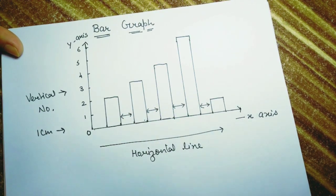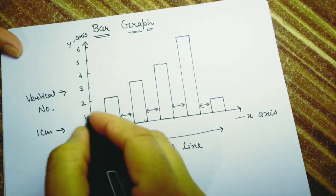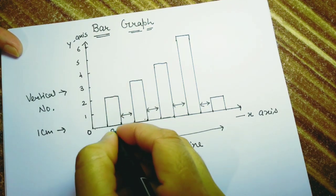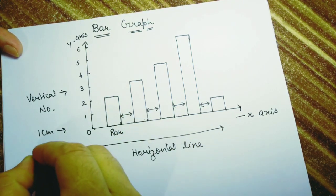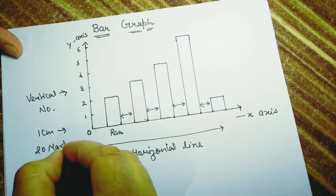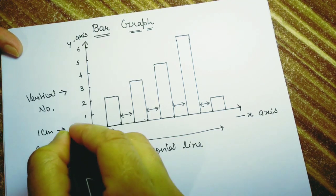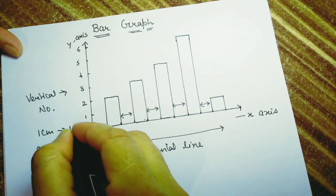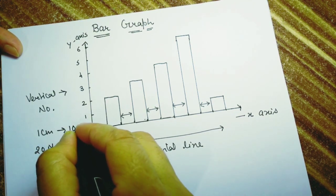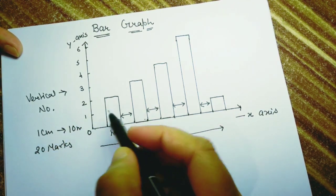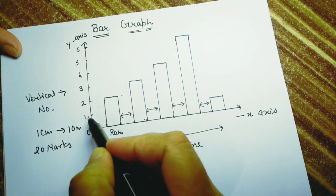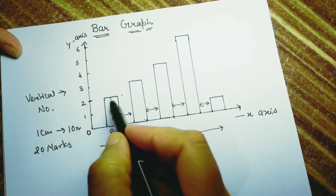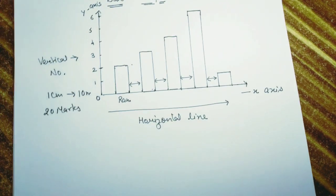For example, if they are asking about the number of students and RAM scored 20 marks, here 1 centimeter shows 10 marks, so to represent 20 marks we have taken 2 centimeters.